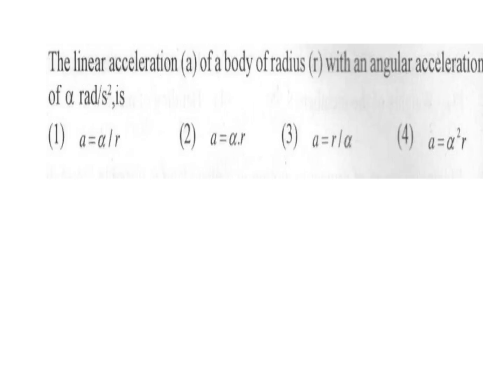The linear acceleration a of a body of radius r with angular acceleration alpha radians per second squared: since linear velocity v = r × angular velocity, linear acceleration a = r × angular acceleration alpha. Therefore a = r·alpha. Option 2 is the answer.